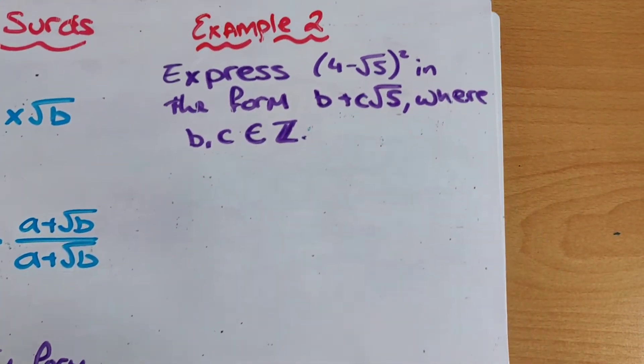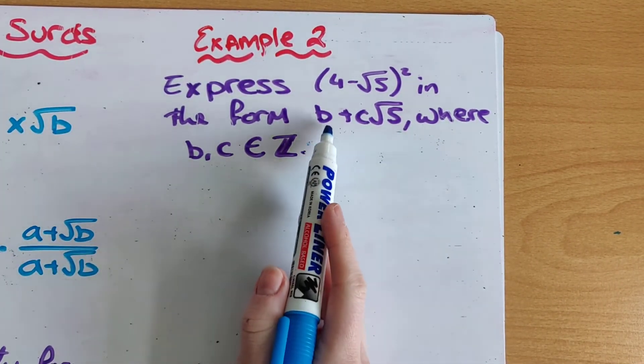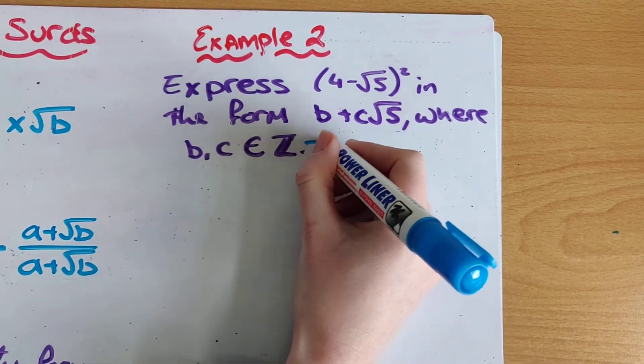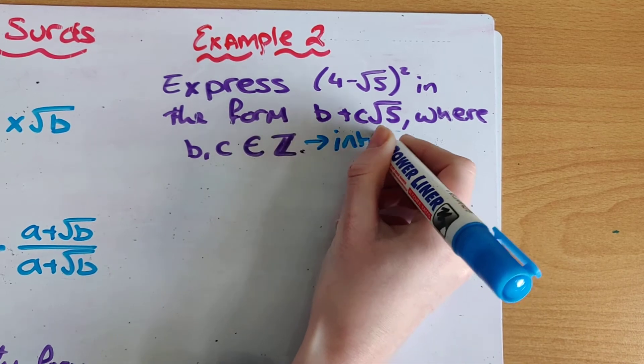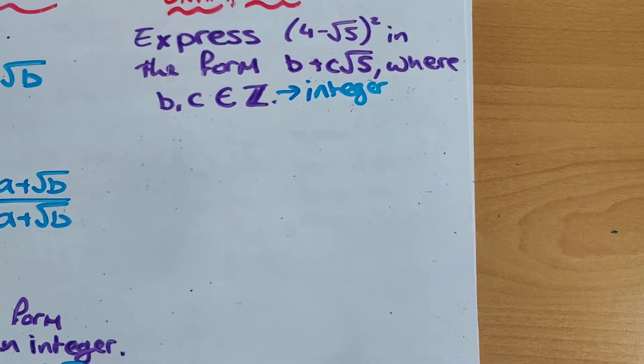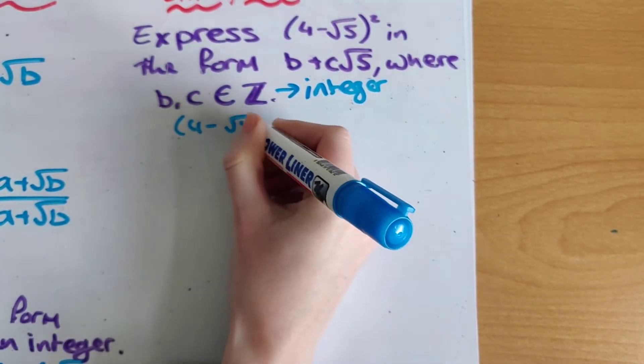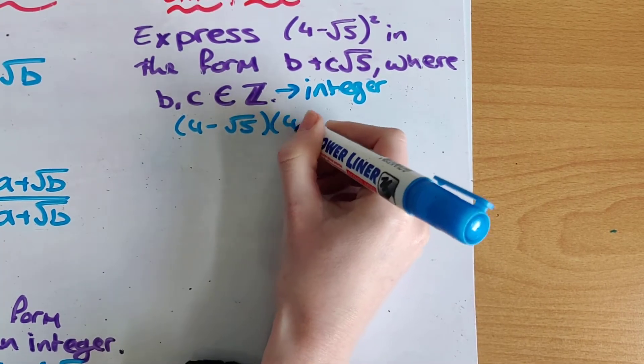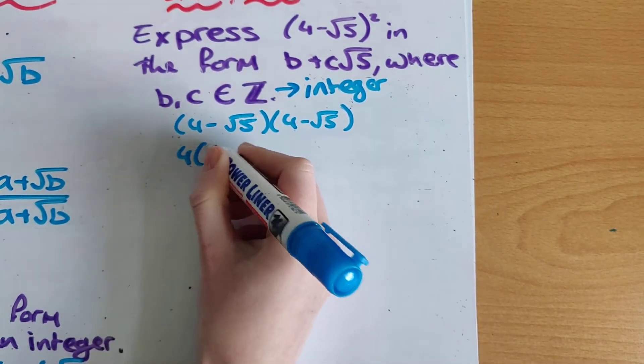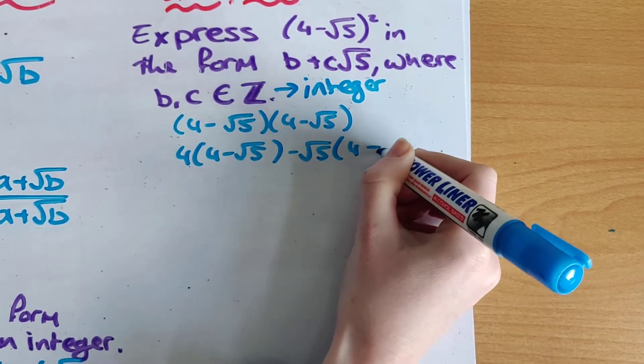So the next one we're going to look at is example 2 here which says express 4 minus root 5 squared in the form b plus c root 5 where b and c are elements of z. Now we remember that z stands for integer which again is a positive or negative whole number so we shouldn't have any fractions or decimals as our answer. And we know that squared means to multiply by itself. So that's really 4 minus root 5 by 4 minus root 5. So now I'm going to split my brackets and multiply. So I have 4 by 4 minus root 5 minus root 5 by 4 minus root 5.